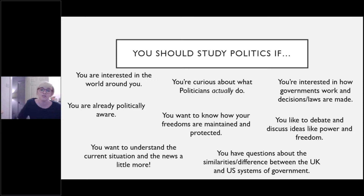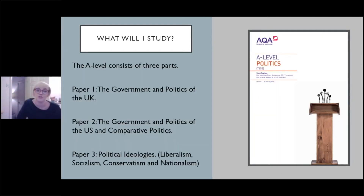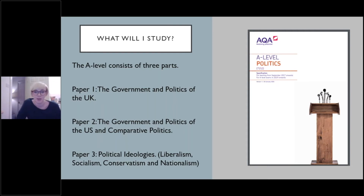If you chose to study politics at Kevix, what would you study? It is broken down into three main parts. Paper one looks at the government and politics of the UK. Paper two looks at the government and politics of the US and comparative politics, so that expects you to compare and analyze your knowledge of both the UK and the US. And paper three is the political ideologies paper.